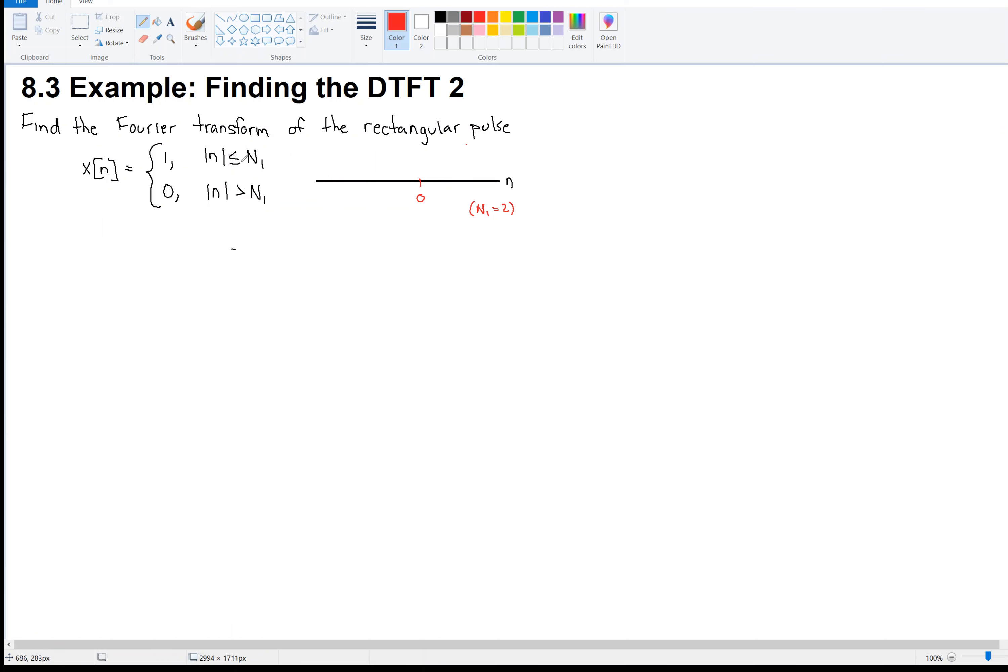Anyway, when n is equal to 0, 0 is less than or equal to 2, so we would have a 1 here. 1 is less than or equal to 2, but so is negative 1, right? The negative 1, the absolute value is 1, 1 is less than or equal to 2. Then 2, at 2, 2 is less than or equal to 2. And negative 2, the absolute value of that, is also less than or equal to 2. But now 3, 4, right, these are all going to be 0.